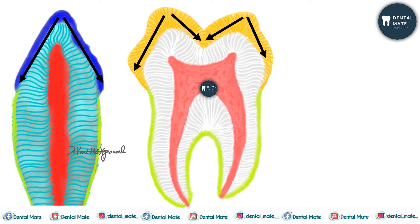In multicuspal teeth, dentine formation begins independently at the site of each future cusp and is genetically determined. It spreads from the cuspal slopes below and fuses with the adjacent formation centers.